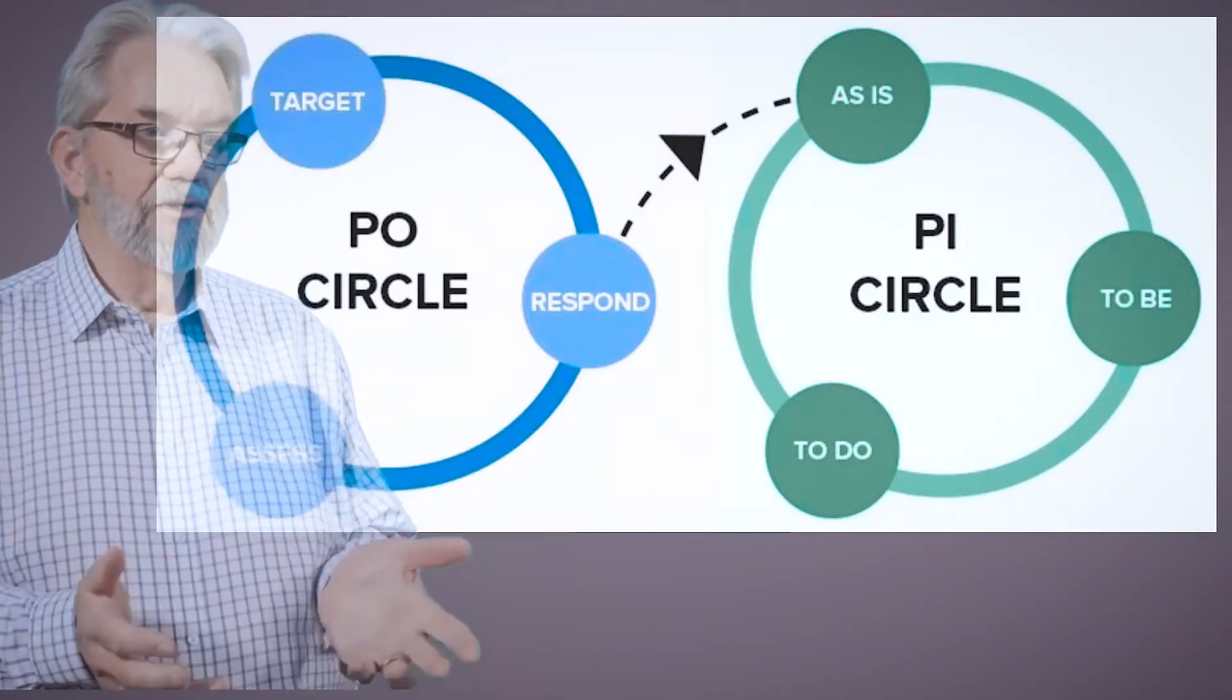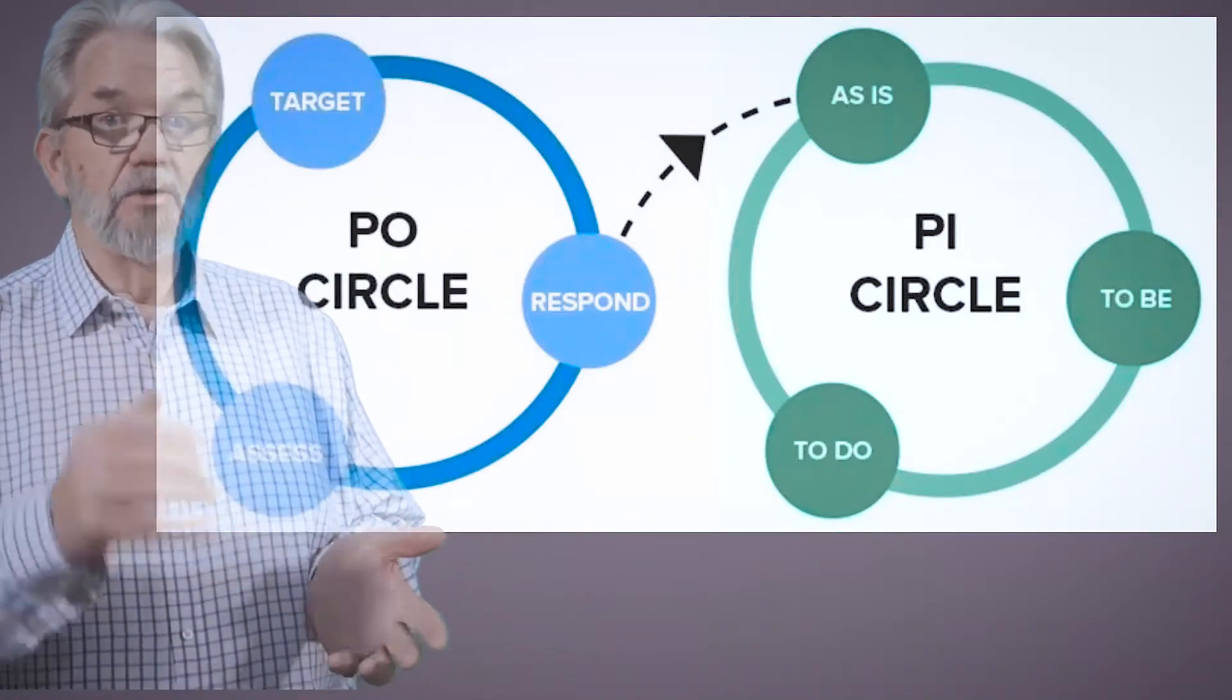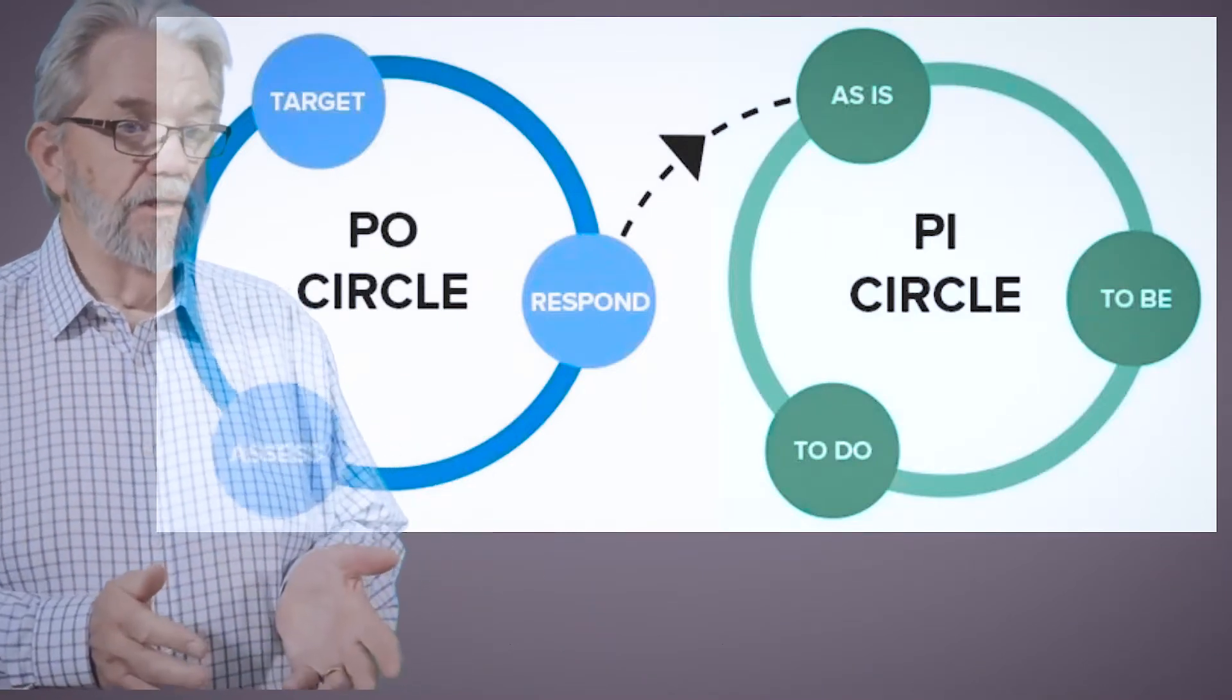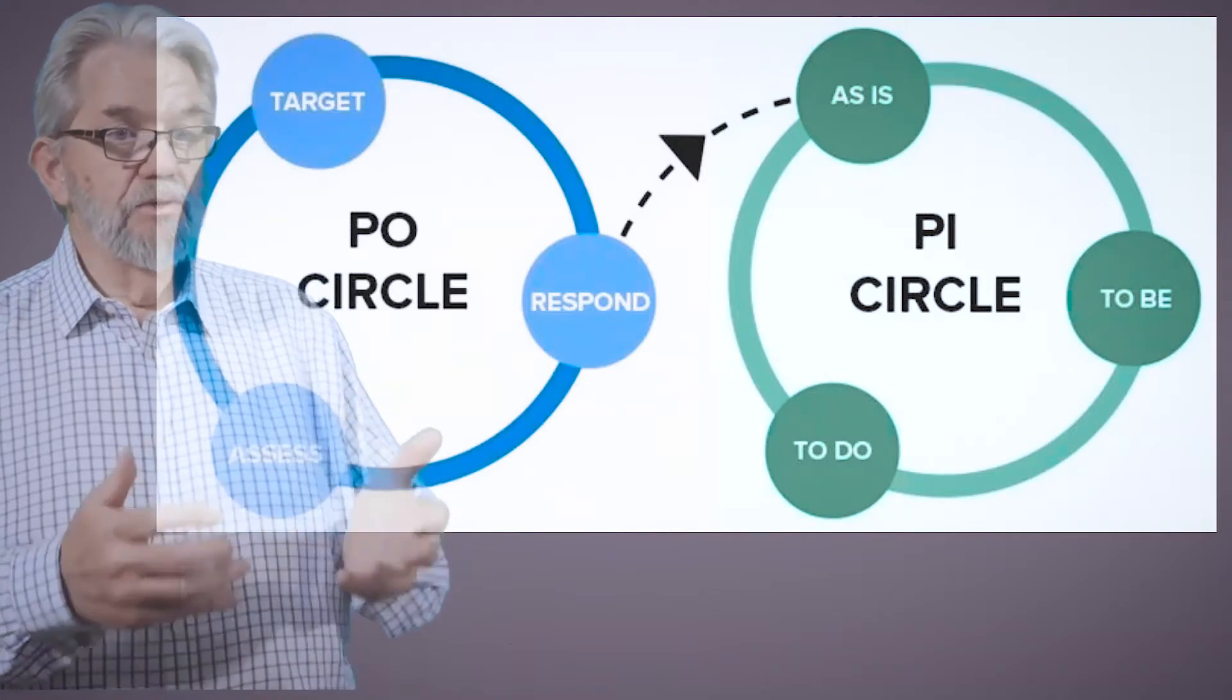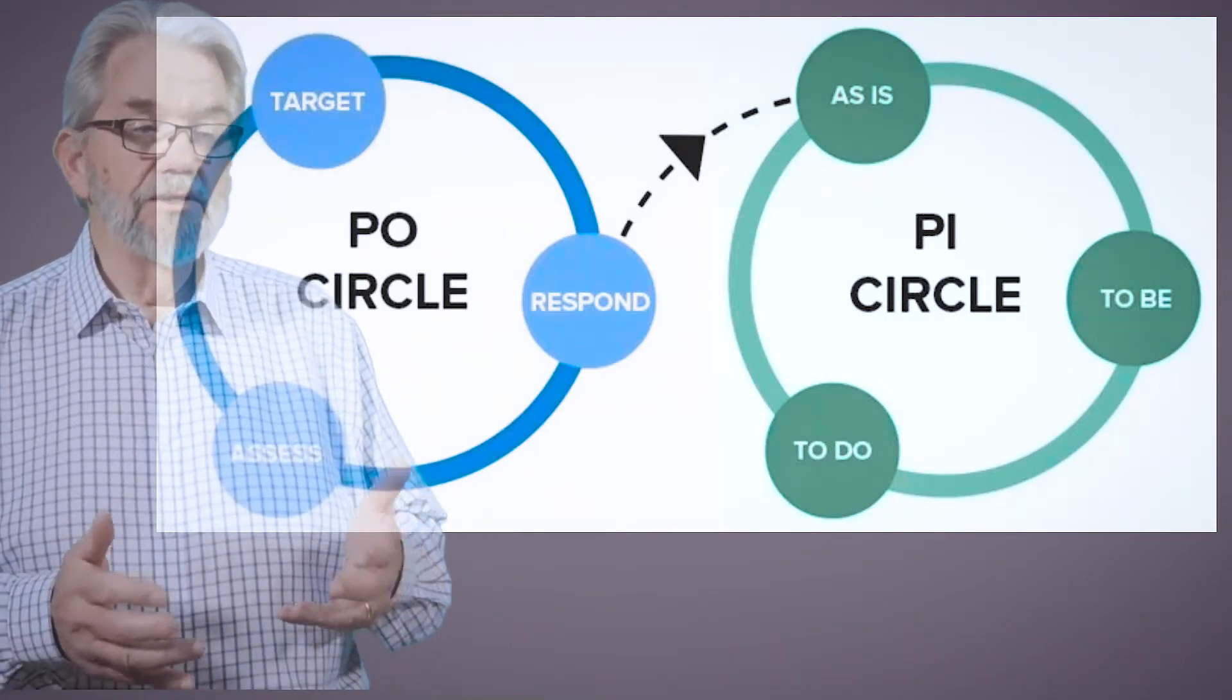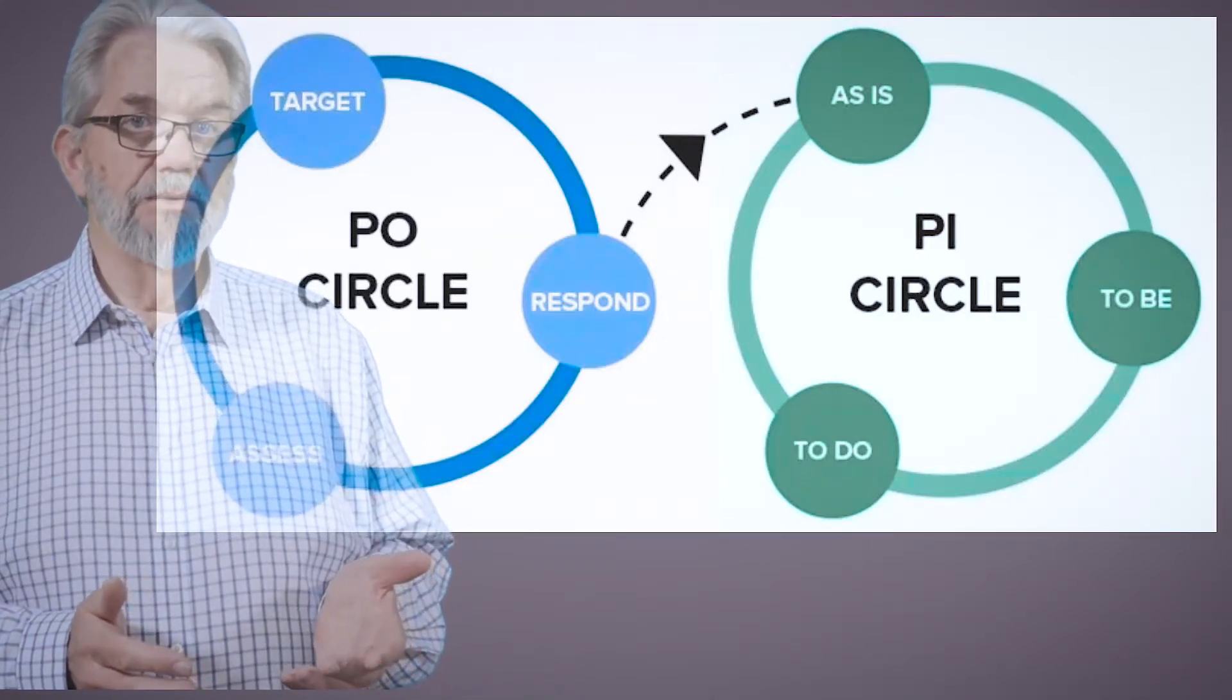You can see we've got two circles. PO or Process Ownership circle and the PI or Process Improvement circle. And we'll go through each of these in detail in a moment. But let's just talk about them generally here first. So the PO circle is about process management. And the PI circle is about process improvement.